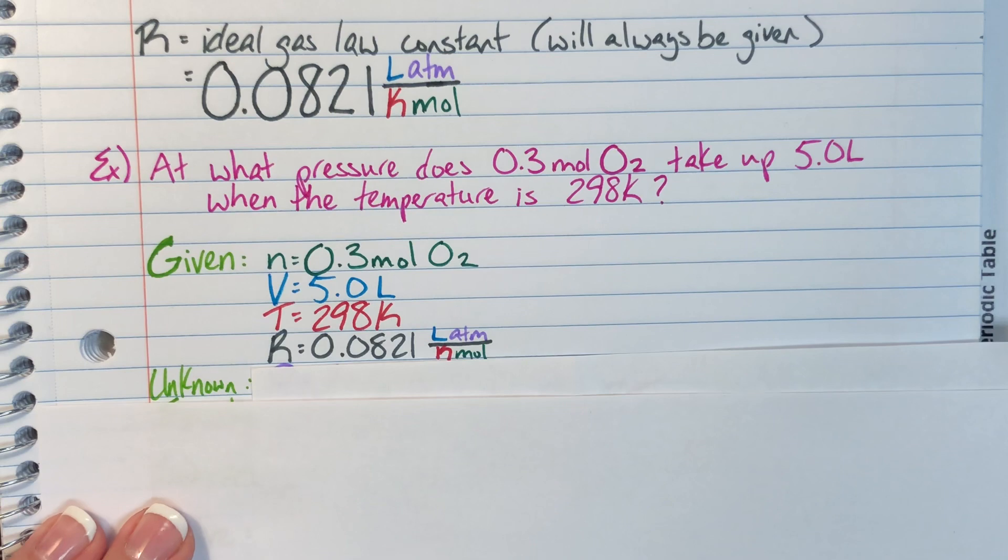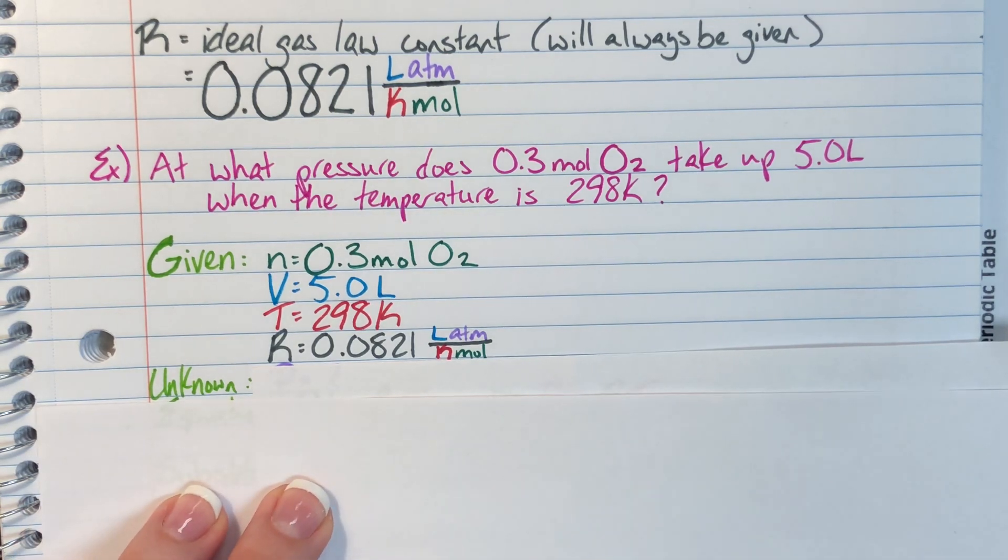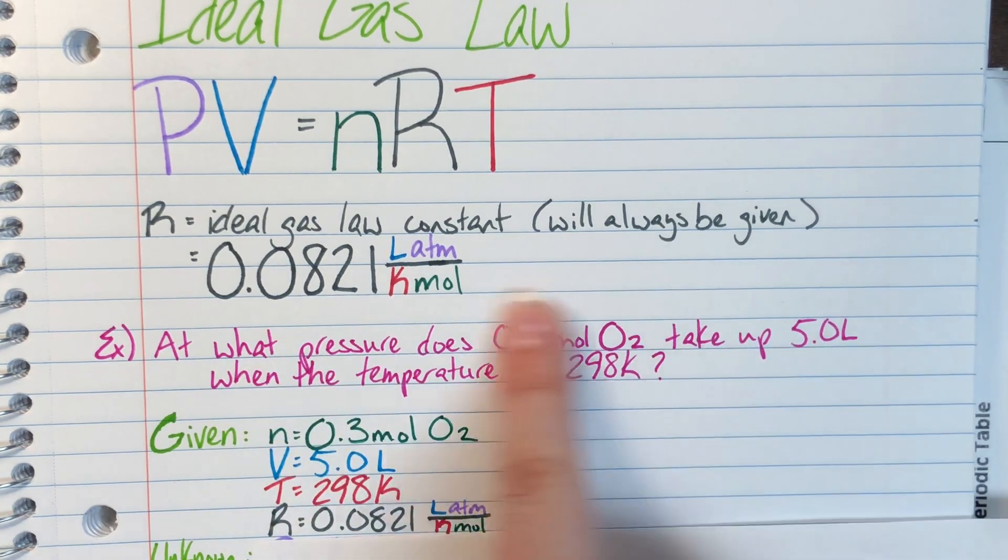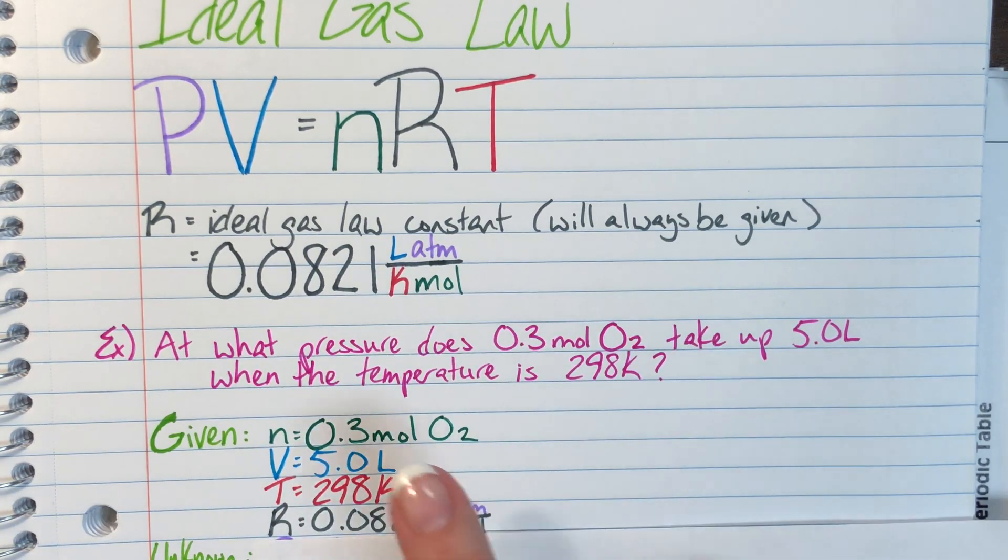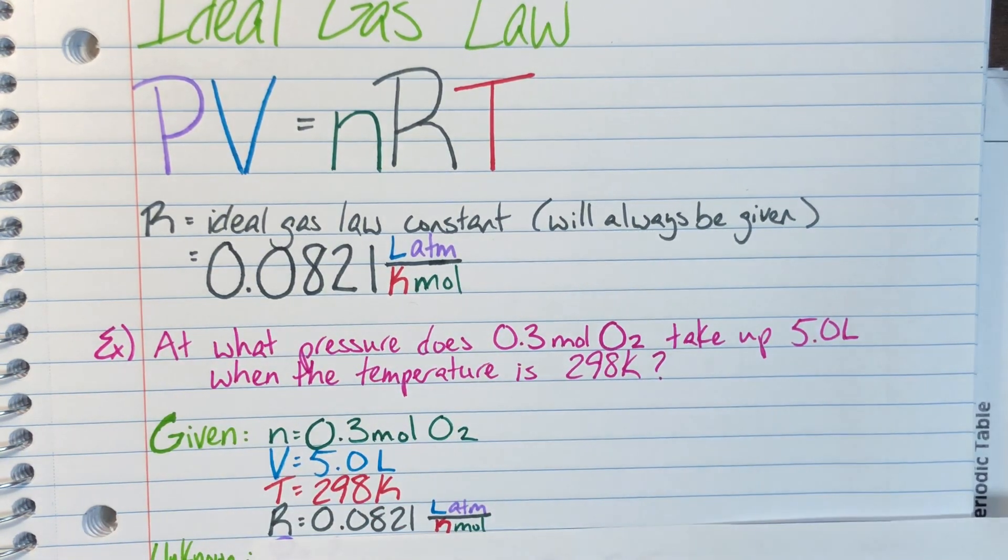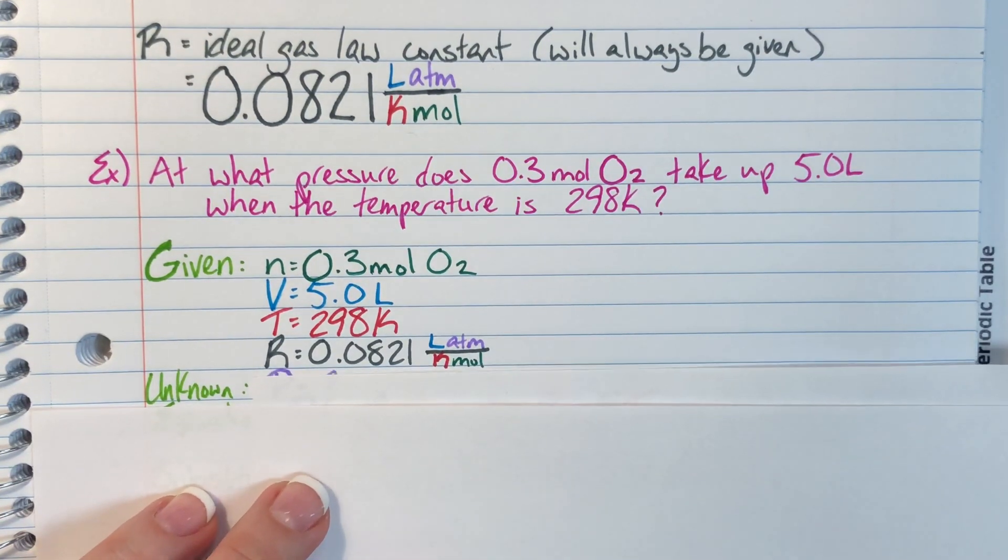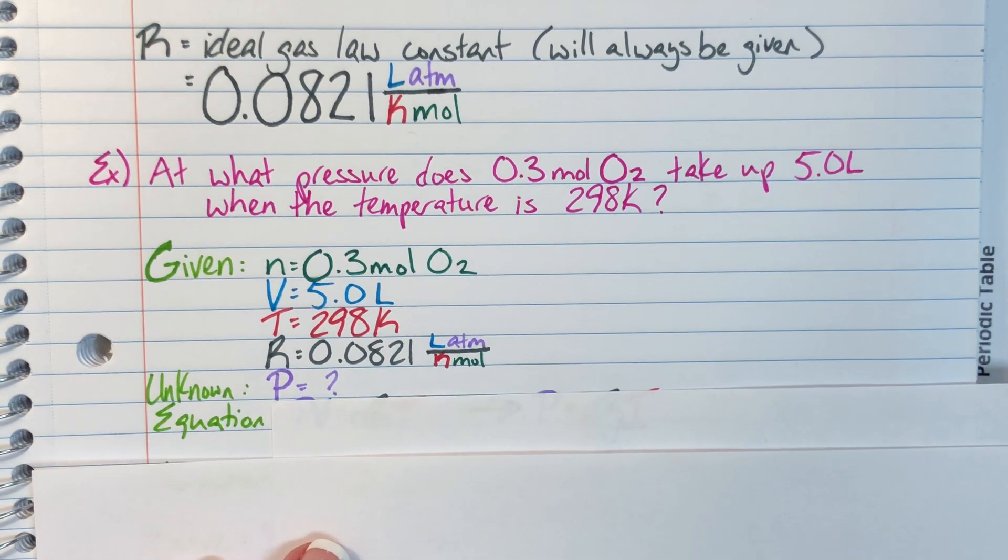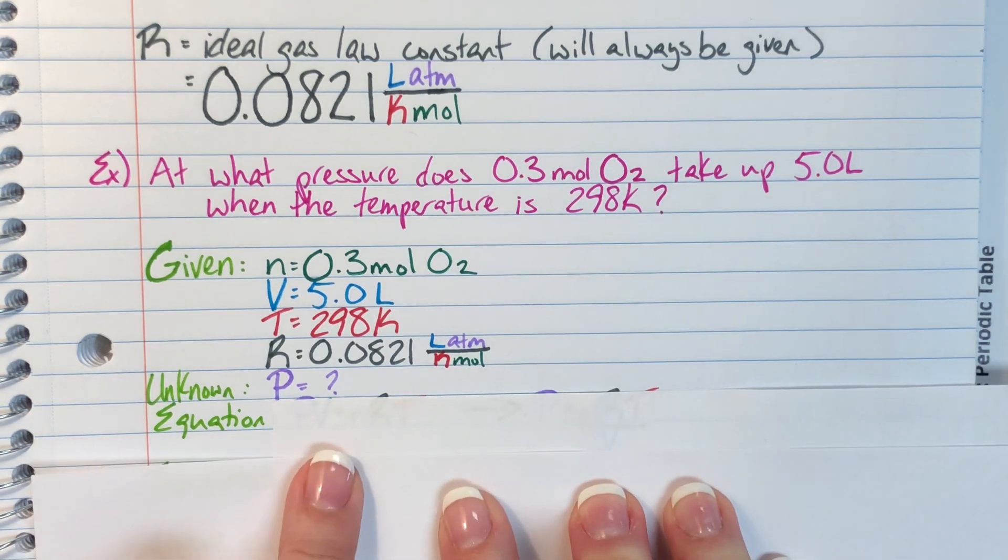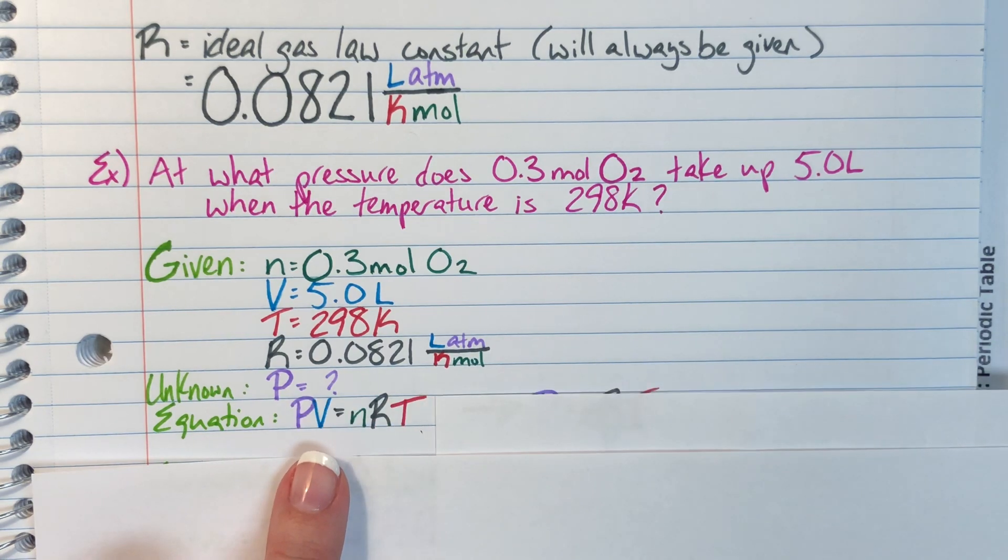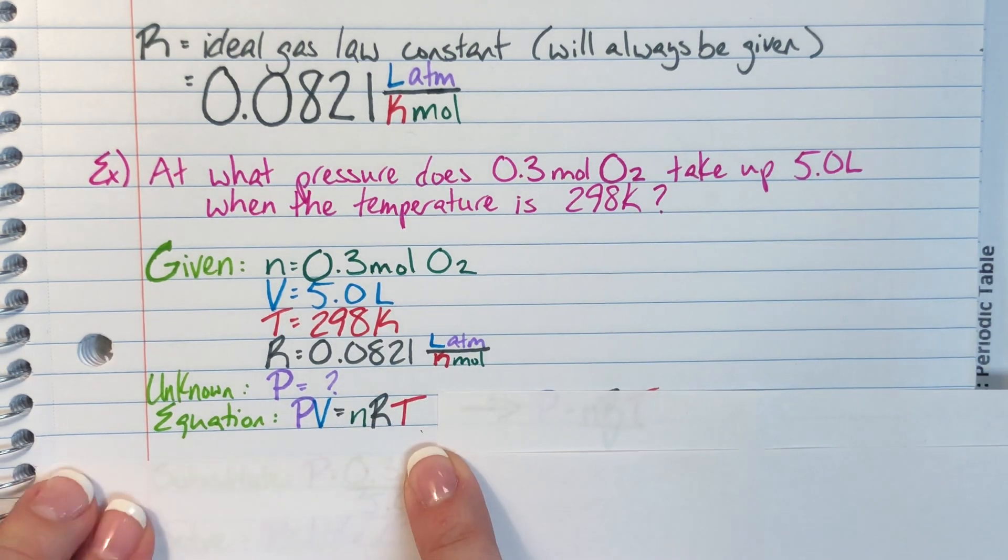The next thing I need to do is identify my unknown. What do I not have from my initial equation? Or find the question word within the actual problem. It says what pressure. I also don't have any units of pressure within my question, so I know that I'm going to be looking for P. After I have identified my unknown, I'm going to figure out what equation I'm using. This is an ideal gas law problem, so the equation is PV equals nRT.